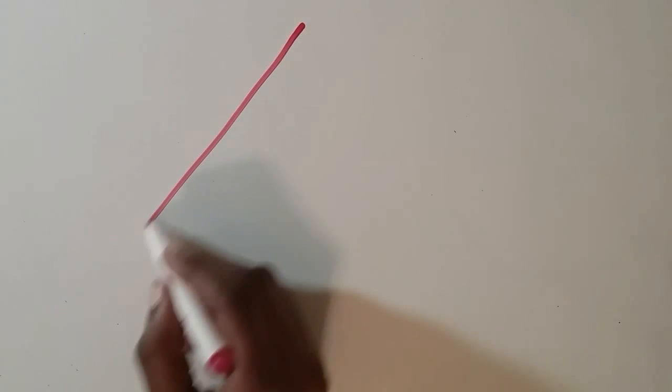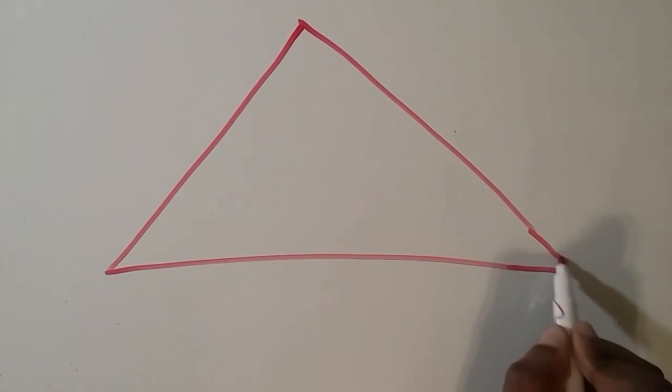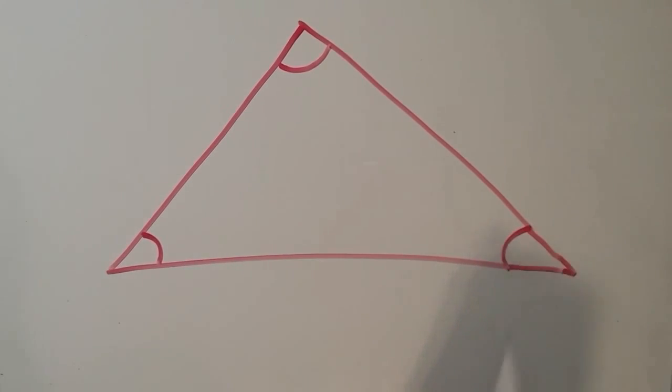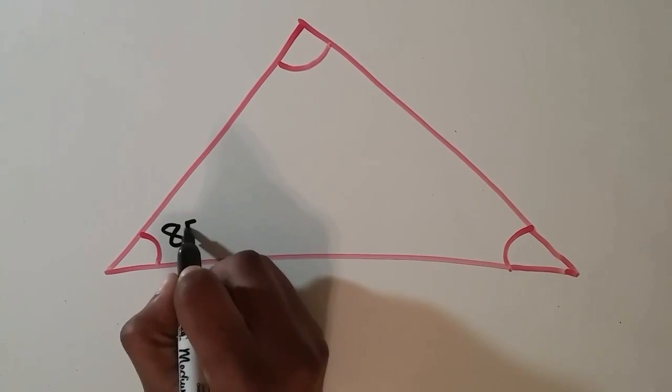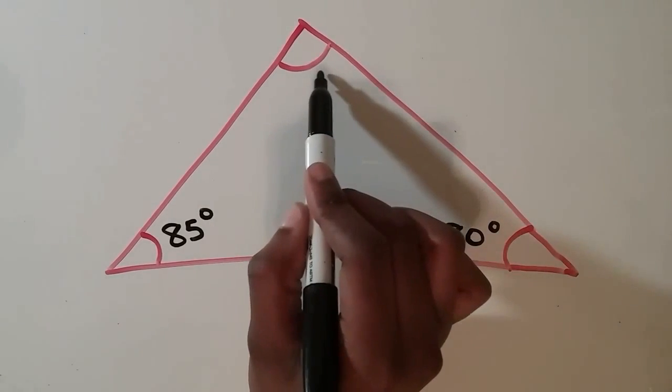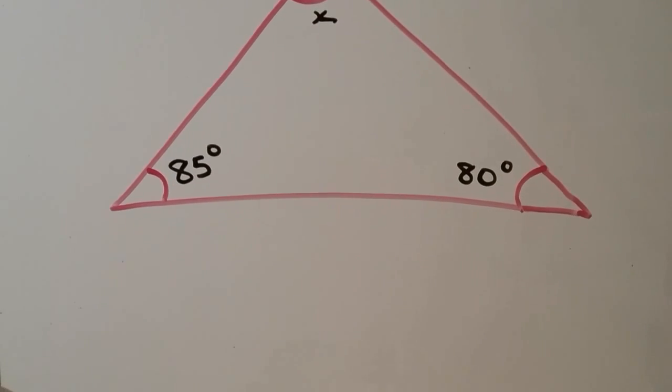Well, suppose we have a triangle, but we only knew the degrees of two of the angles, but we wanted to know the degree of the third one. In this case, we know one of the degrees is 85 and the other is 80, and we're just going to call the one that we don't know x.